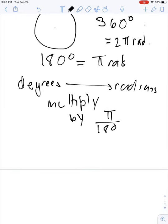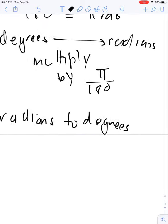And we can go from radians to degrees by multiplying by 180 over π.